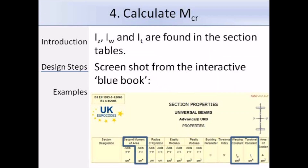From this screenshot from the Interactive Blue Book, you can see that the second moment of area about the weak axis — which in the Eurocodes is the Z axis — I_Z, the warping constant I_W, and the torsion constant I_T can easily be found in the section tables.